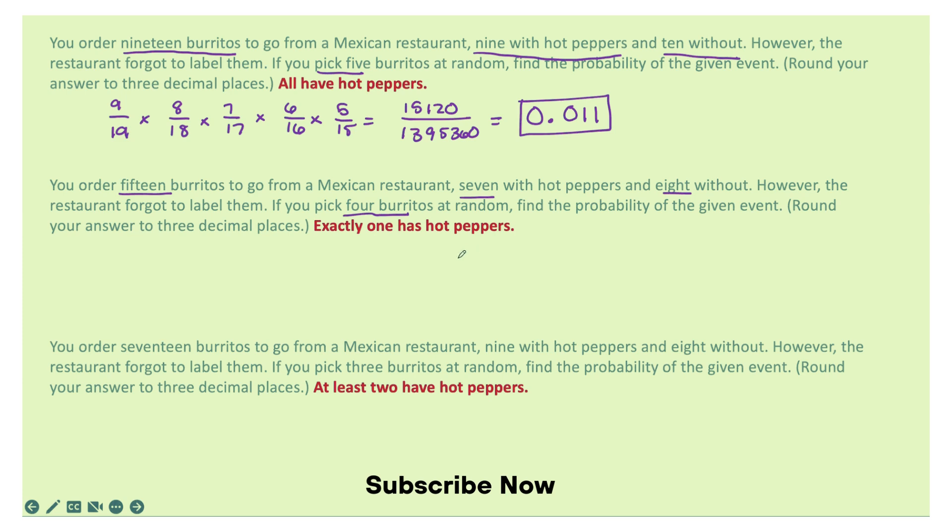Exactly one has hot peppers. So for hot peppers, 7 out of 15 have hot peppers. Then there's 8 out of now 14 left without hot peppers, and then 7 out of 13 left without hot peppers.